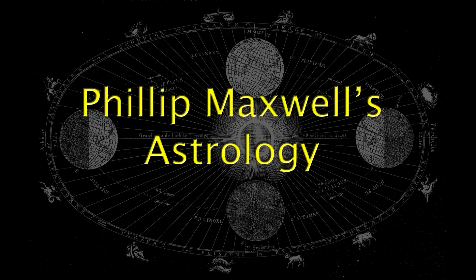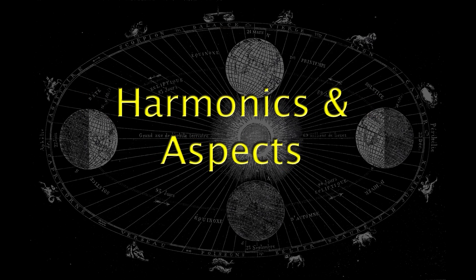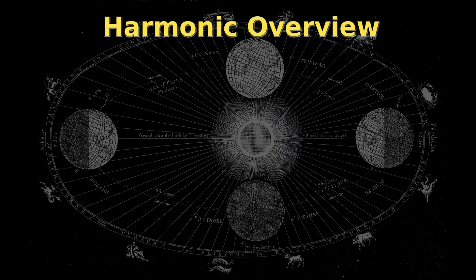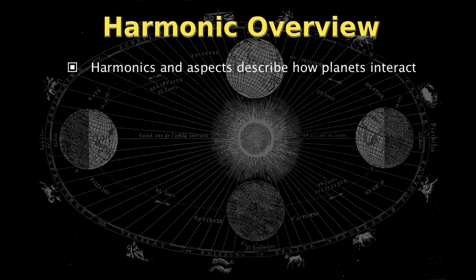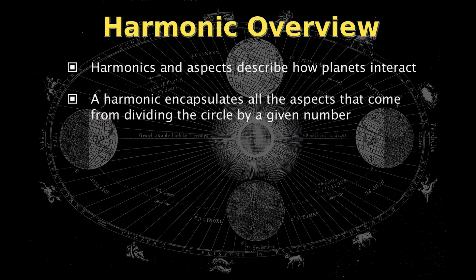Hi, I'm Philip Maxwell, and in this video we'll be discussing harmonics and aspects. Harmonics and aspects are very similar — they both describe how planets interact or come together. The big difference is that a harmonic encapsulates all the aspects that come from dividing the circle by a given number.